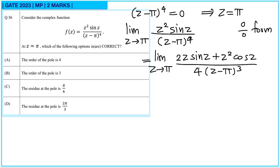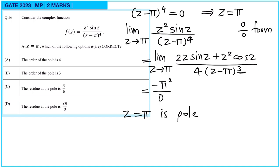Substituting z = π again: the first term 2π·sin(π) = 0, and the second term gives π²·cos(π) = −π². So the numerator is −π² and the denominator is 0, giving a finite-value-over-zero form. This means z = π is a pole of order 3. So option B is correct.